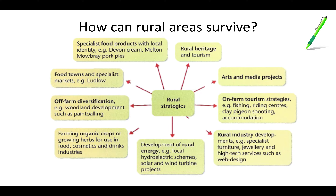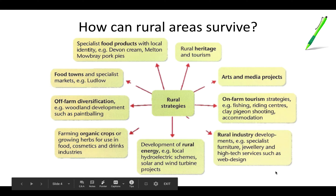For instance, if you have a bit of woodland, people might create places for paintballing — going through the woods in a particular area. A lot of farms have farm shops which sell the products they create there but also locally produced products. Many farms might have small cafes opening up, or other arts-based projects. You can get lots of specialist food products with local identities — Devon cream, Devonshire ice cream, or Melton Mowbray pork pies, which have a special standing where you can only call them that if they actually are from Melton Mowbray. You could also have arts and media projects, horse riding courses, or clay pigeon shooting.